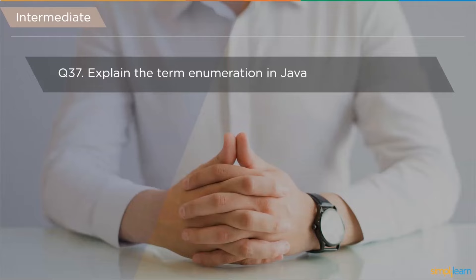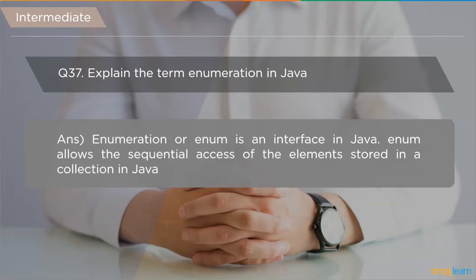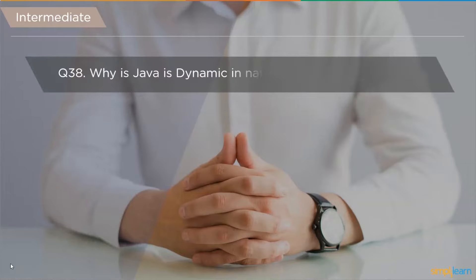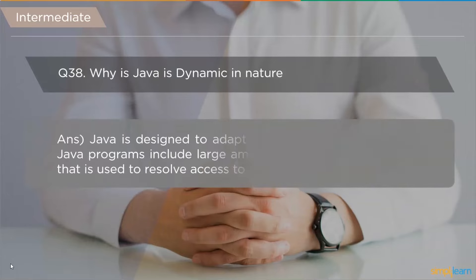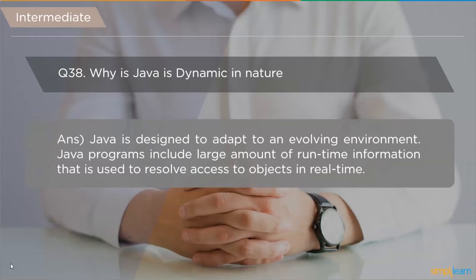The next question is: explain enumeration in Java. Enumeration, or enum, is an interface in Java that allows sequential access of elements stored in a collection. The following question asks why Java is considered a dynamic programming language. Java was designed to adapt to an evolving environment, and Java programs include large amounts of runtime information used to resolve access to objects in real time.